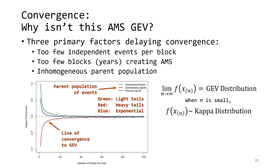Sometimes when you gather annual maximum data, the sample you get doesn't look like it has a GEV distribution. There are three primary factors that can delay the onset of convergence. First, there are too few independent events per block — the maximum of two or three values still looks a lot like the parent population. Second, limited sample sizes introduce substantial uncertainty due to sample error. Third, and most often, the parent population is actually a mixture of several kinds of processes, so our samples are inhomogeneous. In situations where the number of events per block is too small, consider using the kappa distribution instead, which we determined in a technical paper should be used when an extreme value analysis is appropriate but events per block are insufficient.